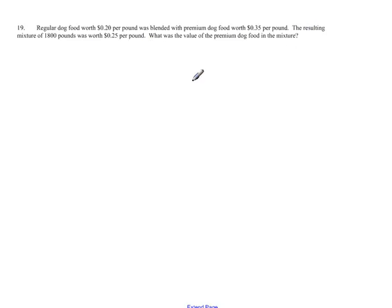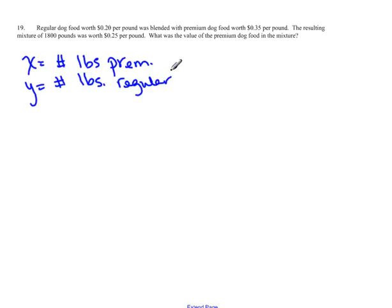What was the value of the premium dog food in the mixture? So, x is going to be the number of pounds of premium, and y is going to be the number of pounds of regular. Or you could have done it the other way around. Is this a value or a total value? Meaning, is there a total of the two mixed premium and regular? Yeah, right here, 1,800 pounds. So, this is a total value problem, and we have x plus y equals 1,800.